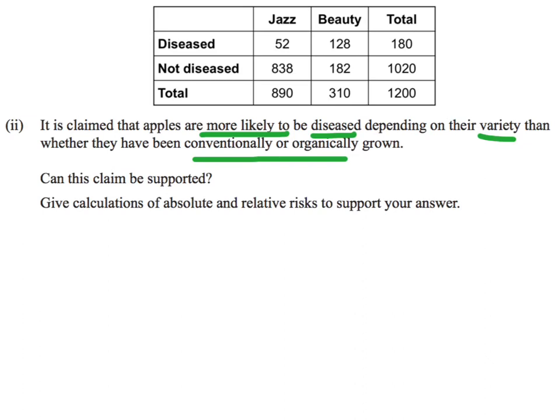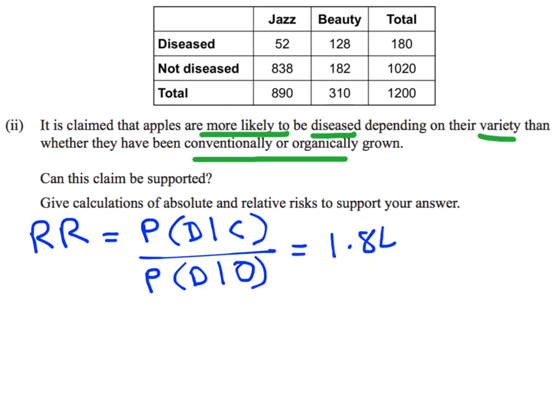So if we go back to our previous answer, back in part A4, what we had found there was the relative risk for apples that are conventionally grown compared to those that are grown organically. That was looking at the probability of a diseased apple given that it was conventionally grown, over the probability of a diseased apple given it was organically grown, and that relative risk was 1.84.